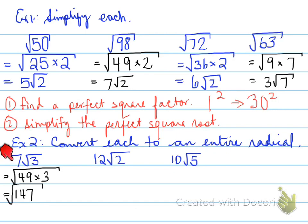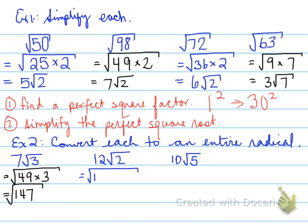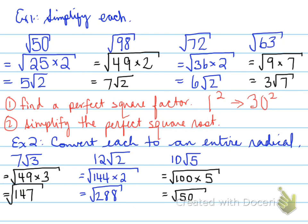To confirm: you square the outside number and bring it under the radical. For 12 root 2, bring the 12 inside: root of 144 times 2 gives root 288. For 10 root 5, bring the 10 inside: root of 100 times 5 gives root 500. Each of these has now been converted to an entire radical.